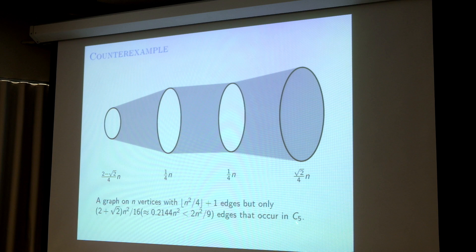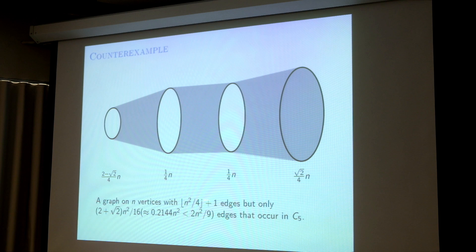Of course you can generalize this counterexample by adding one more part, giving 5 parts. Edges here will be in C9, but not in C7. But this is not a counterexample, simply because it won't give you better than 2n²/9 edges. So this type of construction only gives a counterexample for C5.